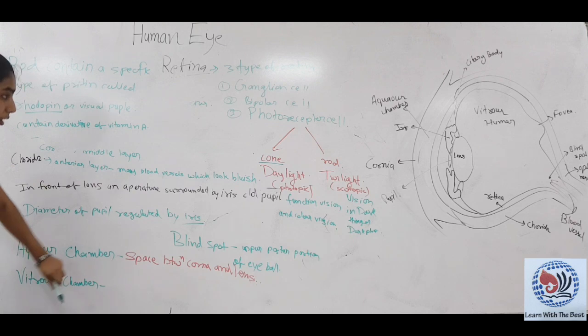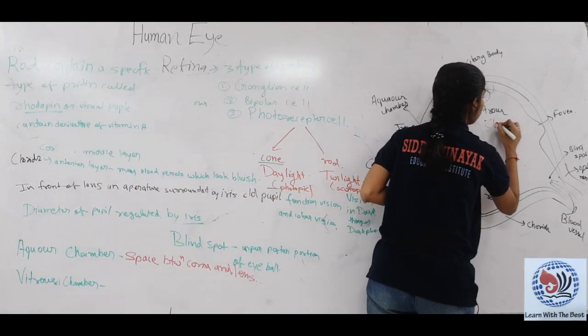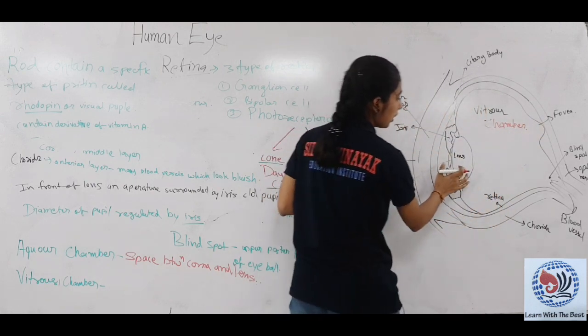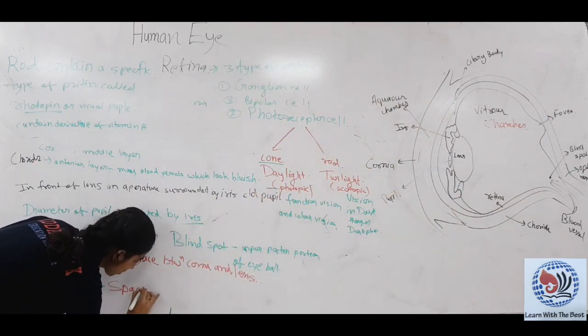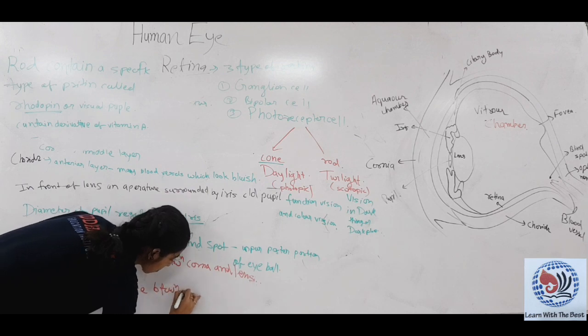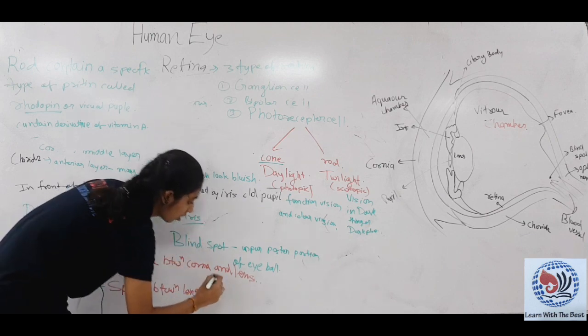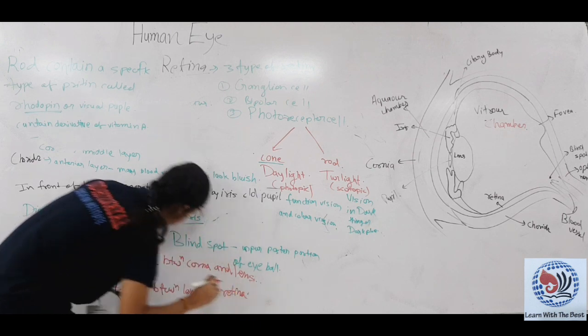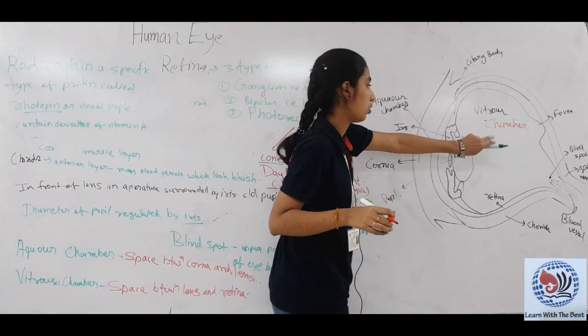Second is vitreous chamber. Vitreous chamber is the space between lens and retina.